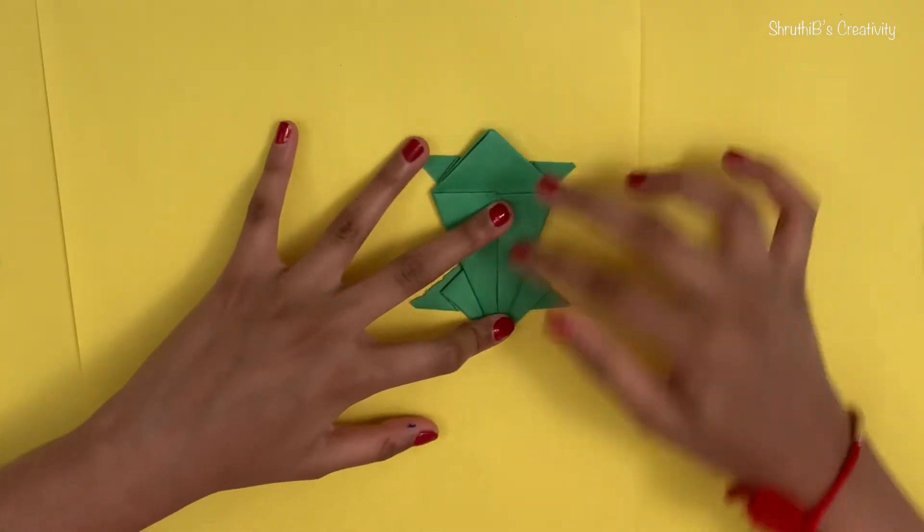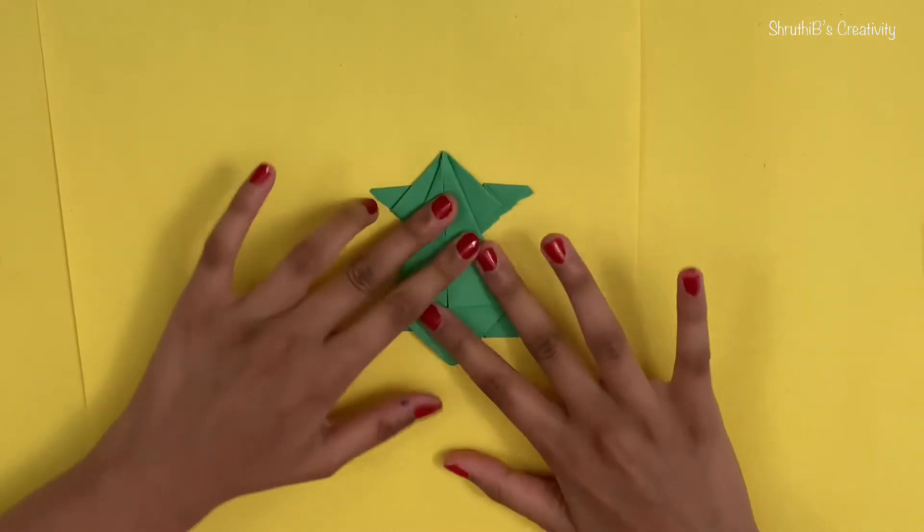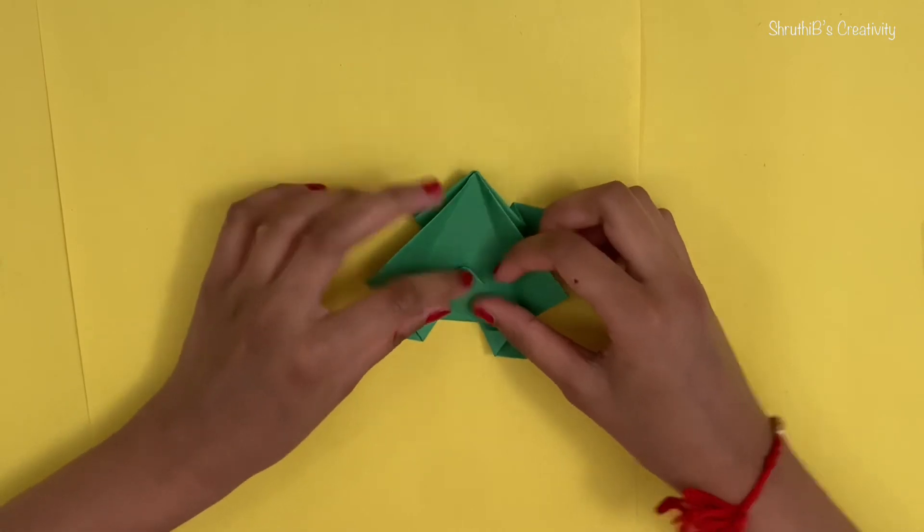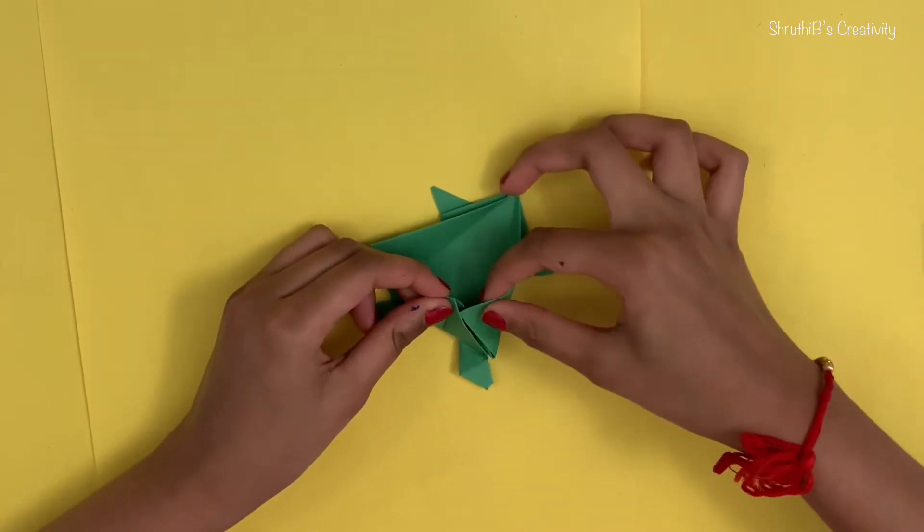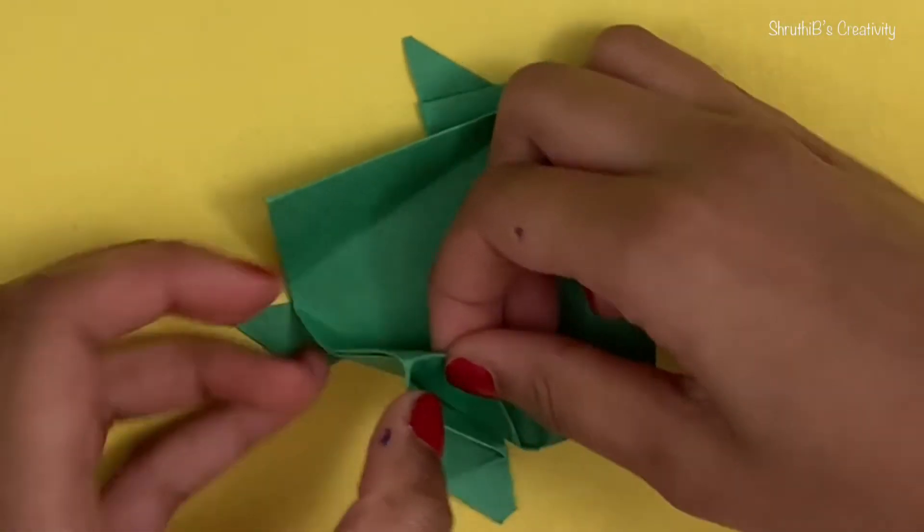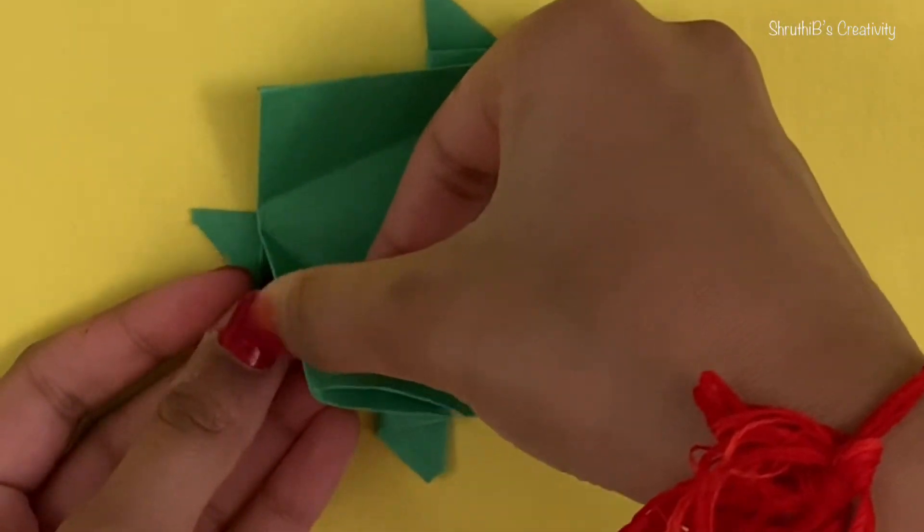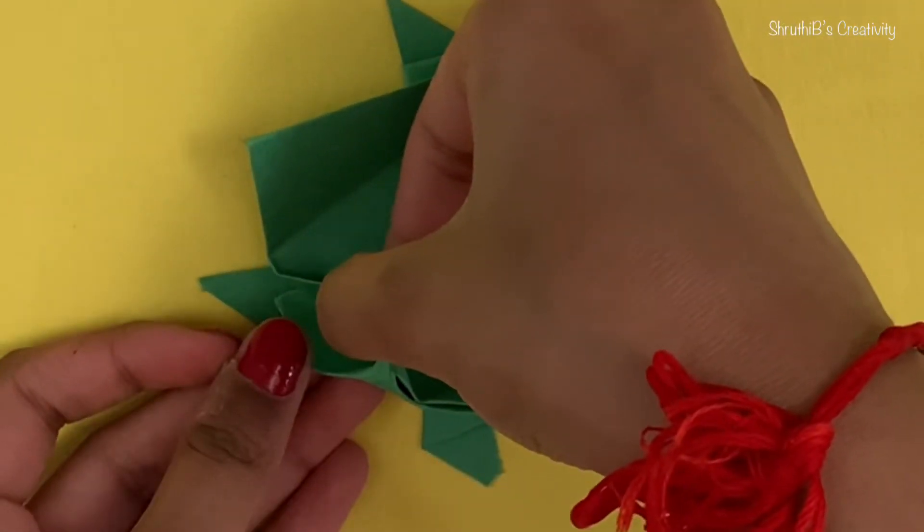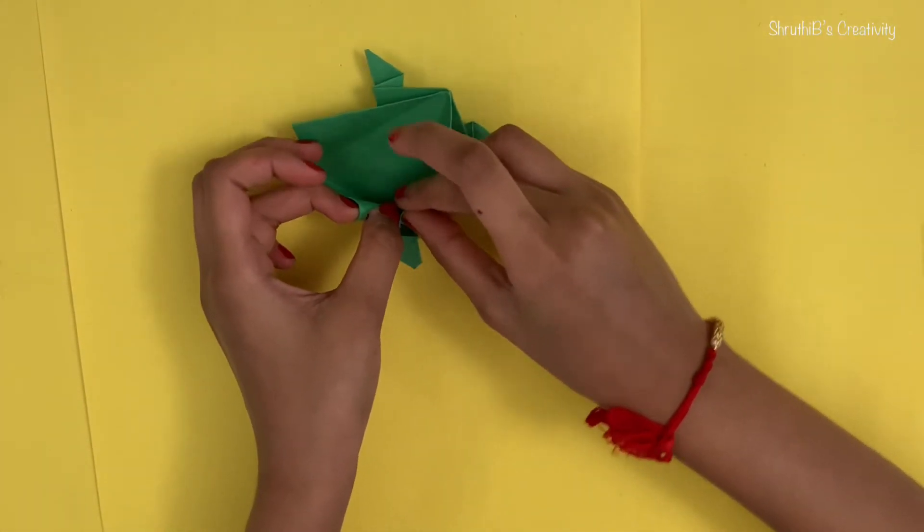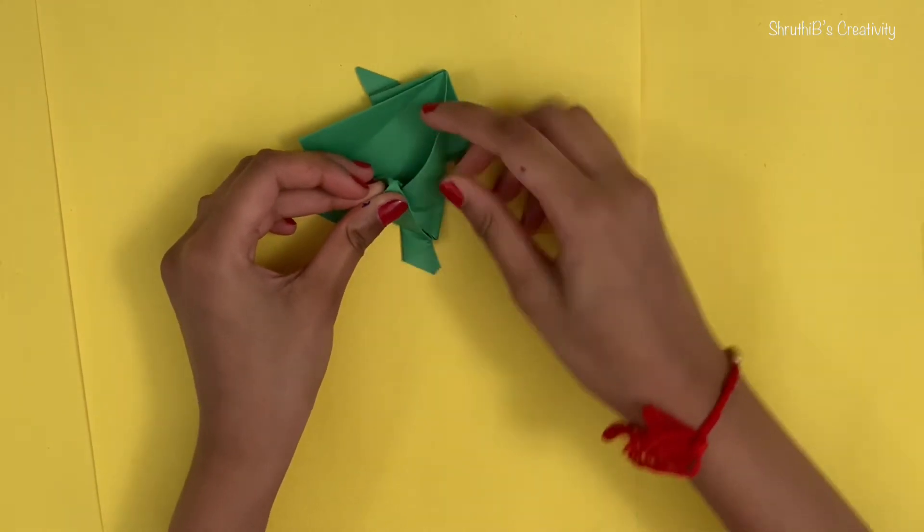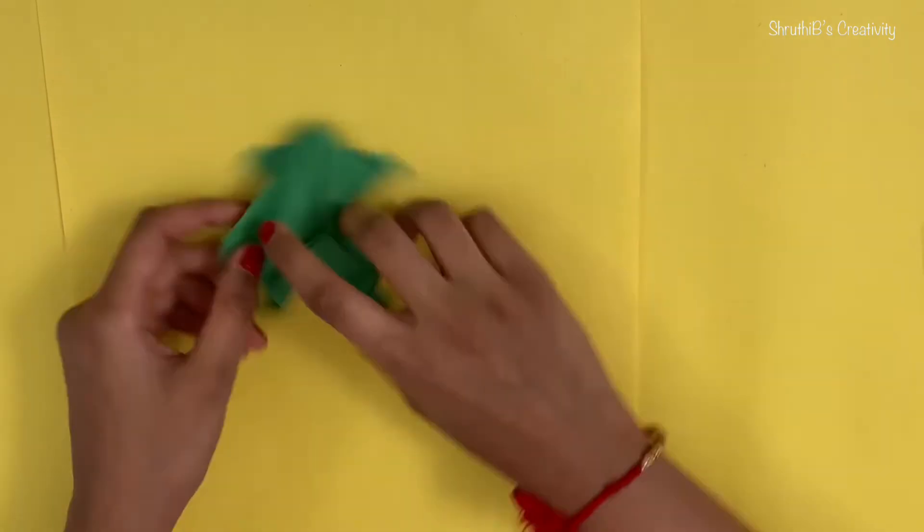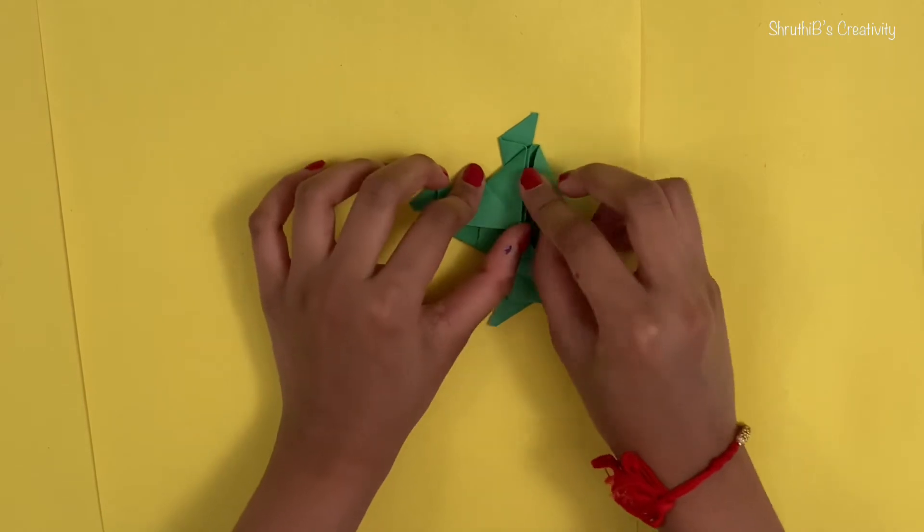Do the same to the other side. And now you're going to take this fold, fold it upwards earlier, and you're going to tuck this fold in. So you must be having like holes over here, two holes, one over here and one on this side. So you're going to use those holes to tuck these big folds in. And you're going to do the same to the other fold.